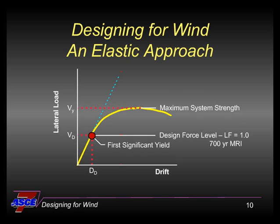You can see that we start out at the origin and the building essentially responds in a linear fashion as you apply the load. Even under the ultimate wind load — which in the ASCE 7-10 standard is defined as a 700-year mean recurrence interval wind load for Category 2 buildings — even under this ultimate wind load with a load factor of one, we expect the building to perform no higher than that red dot there. It stays essentially elastic. We do not expect even under this maximum wind load for the building to respond in the inelastic range.